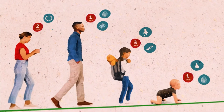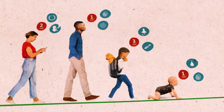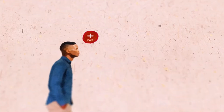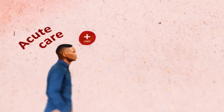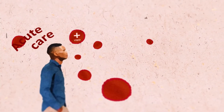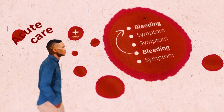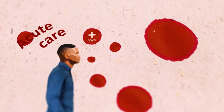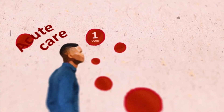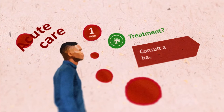Von Willebrand disease has an impact on many aspects of healthcare, so a multidisciplinary approach is crucial. If a patient with von Willebrand disease requires acute care for bleeding or another condition, it is important to prepare for excessive haemorrhage and prioritize the bleeding in your assessment and treatment plan. If possible, ask the patient for their disease type and treatment of choice, and consult a haematologist.